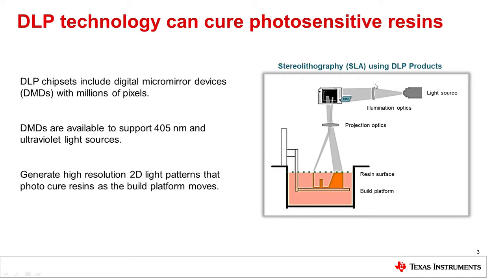DLP chipsets include digital micromirror devices, or DMDs, containing millions of pixels that can produce 2D light patterns with sub-30 micrometer resolution at the resin surface, resulting in 3D printed objects with fine feature sizes and smooth finishes.